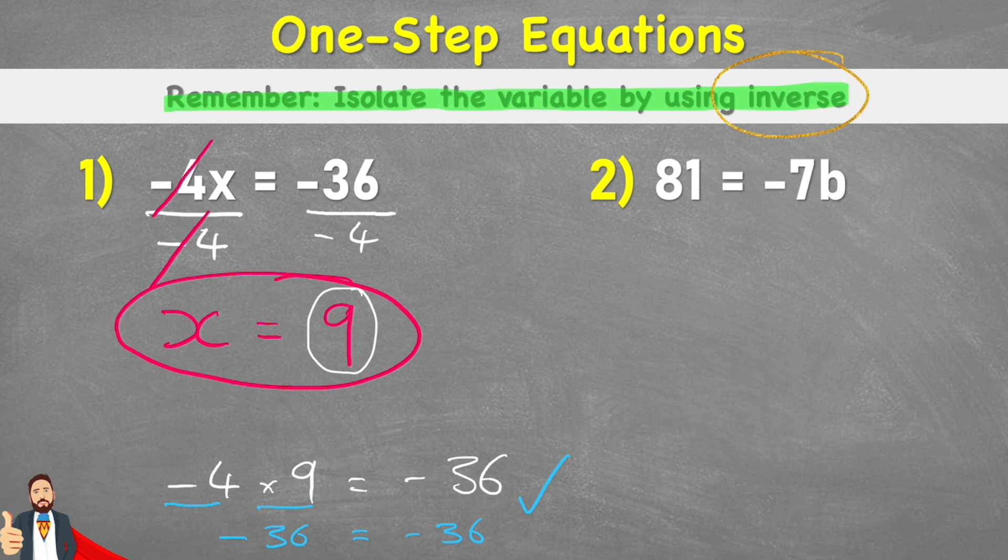OK, let's have a look at the second example. This time our value on the left-hand side is not negative, it's positive. But the value that's connected to our variable is negative. So my equation reads 81 equals negative 7b.